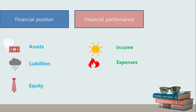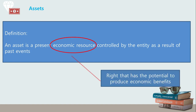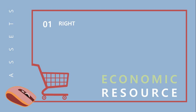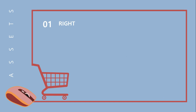In this chapter we shall endeavor to define each of these elements according to the conceptual framework. Let's start with assets. An asset is a present economic resource controlled by the entity as a result of past events. An economic resource is a right that has the potential to produce economic benefits. In order to fully understand how the framework views an asset, let us first understand: right, potential to produce economic benefits, and control.